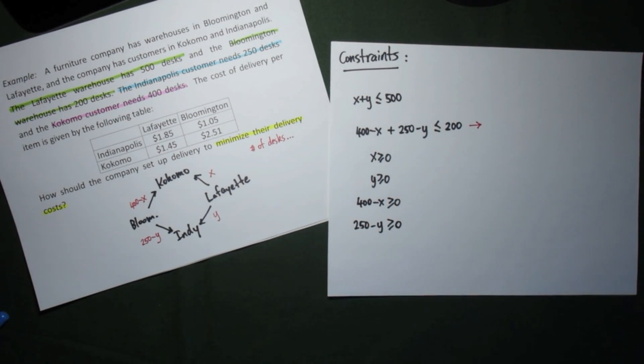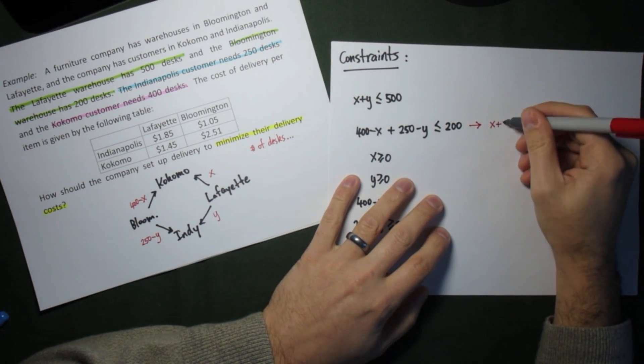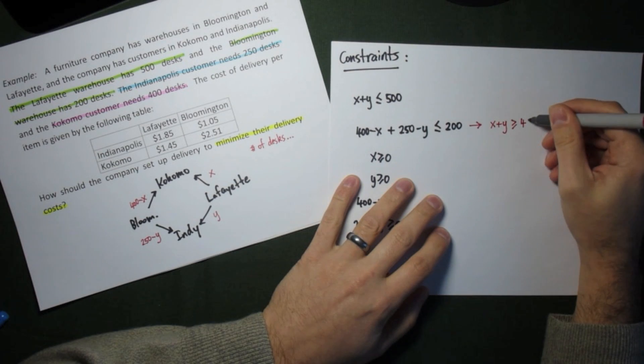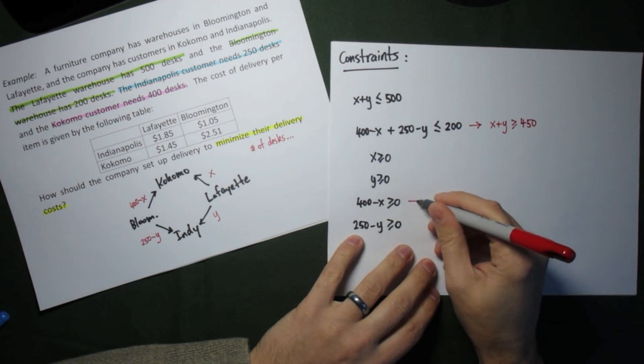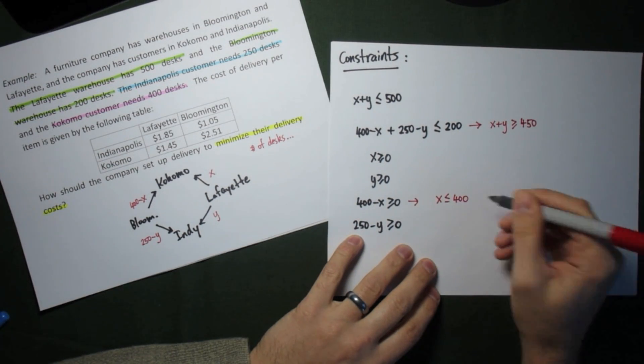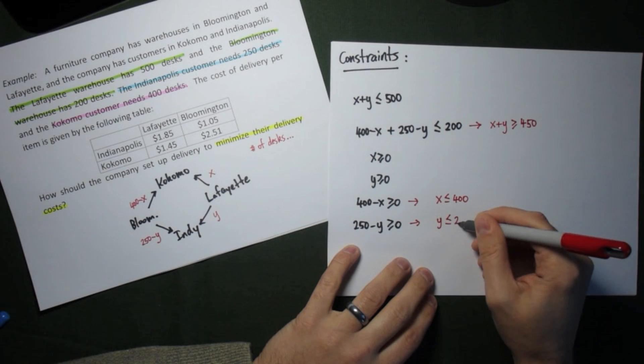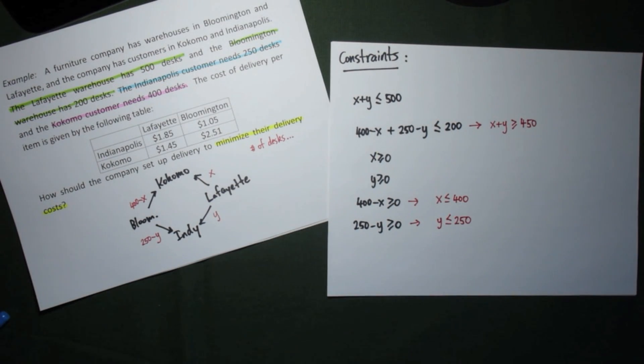Finally, to make this something we can actually work with, we simplify all of the constraints. And so, collecting all of our x's and y's against all of our numbers, we can simplify the constraints to a form that we can actually work with.